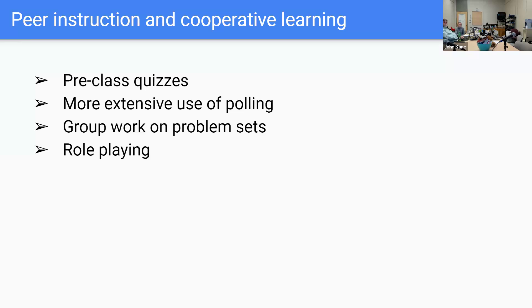Role playing is another thing that could be done. Other types of active learning and cooperative activities include polling in the way Eric Mazur suggests.